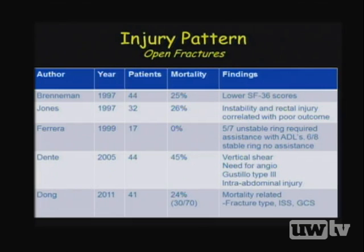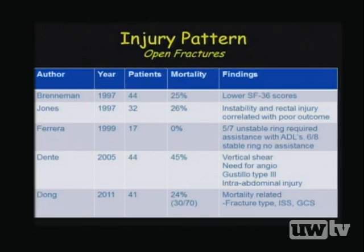Brenneman's 1997 study of 44 patients found that open injuries led to worse SF-36 scores, mainly regarding return to work and pain. Jones' multicenter retrospective study of 32 patients found that pelvic ring instability plus rectal injury worsened outcomes — rectal injury without diverting colostomy was found to be lethal. Dent found that vertical shear injuries, need for angio, open wounds to Gustilo type 3, and intra-abdominal injuries increase mortality. Dong found in 41 patients that APC and vertical shear fracture types with ISS over 24 and GCS less than 8 led to higher mortality.